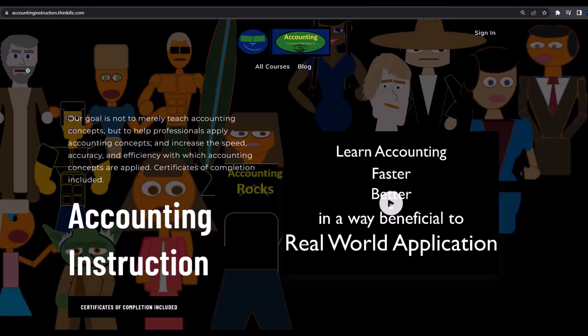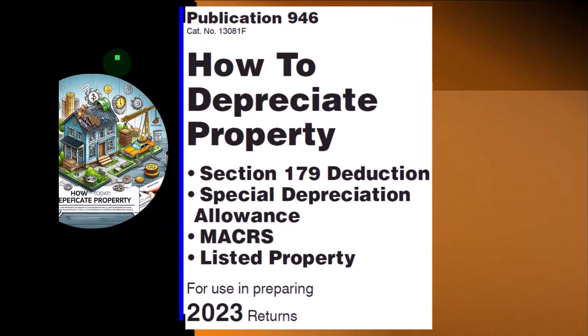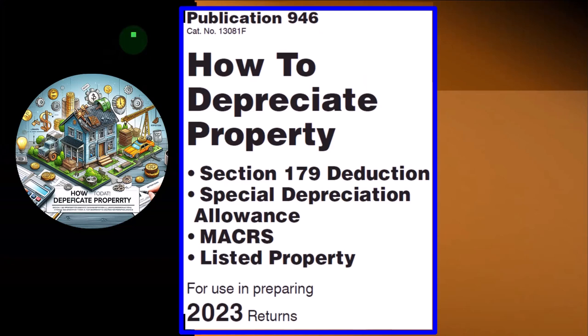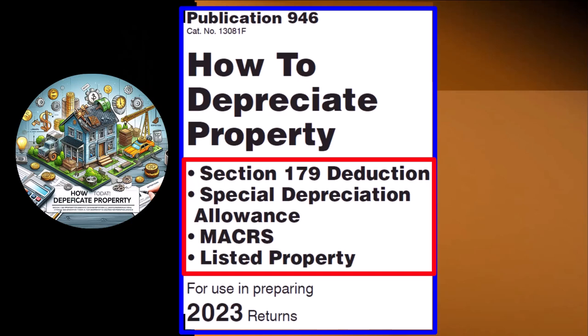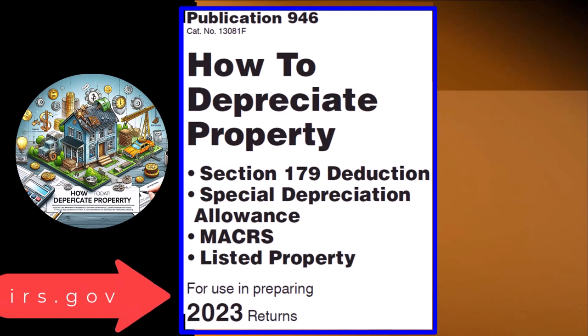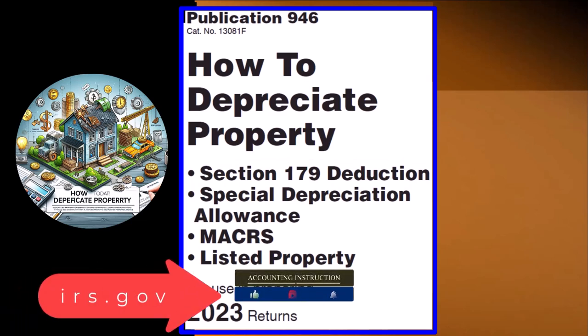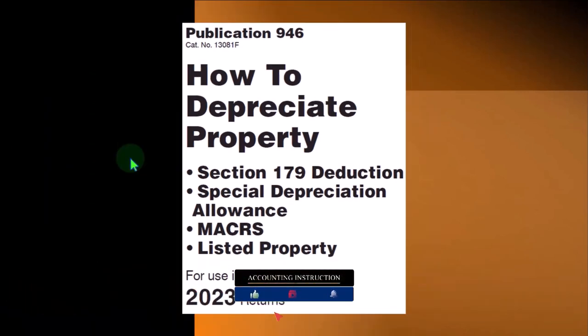If you would like a commercial-free experience, consider subscribing to our website at accountinginstruction.com or accountinginstruction.thinkific.com. Most of this information can be found in Publication 946, How to Depreciate Property — Section 179 Deduction, Special Depreciation Allowance, MACRS Listed Property, and more. Tax Year 2023, which you can find on the IRS website at irs.gov.